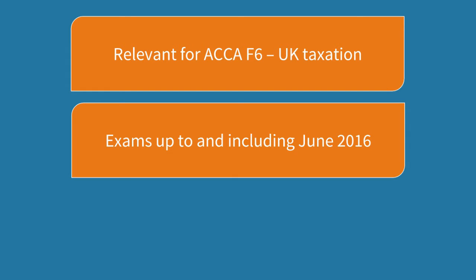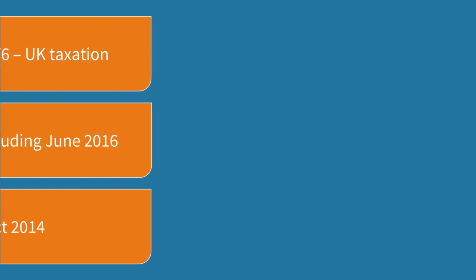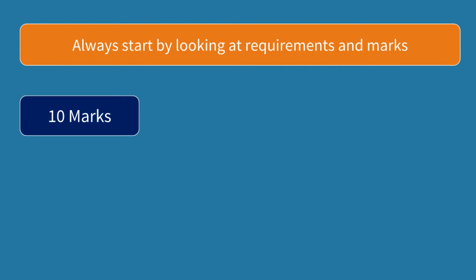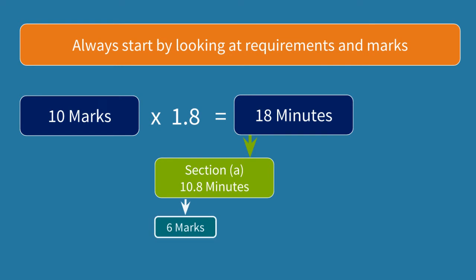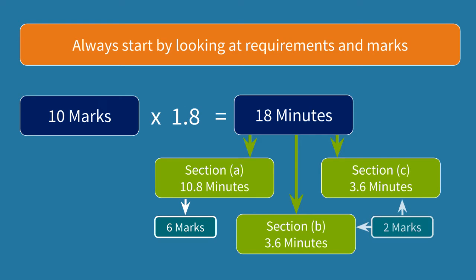Which will use the tax rates and allowances from the Finance Act 2014. In any exam question we always start by looking at the requirements and the associated marks to help with our planning. This question is worth 10 marks so with 1.8 minutes per mark we should spend no longer than 18 minutes in total. 10.8 minutes should be spent on part A for 6 marks, then 3.6 minutes for part B and 3.6 minutes for part C, which are each worth 2 marks.